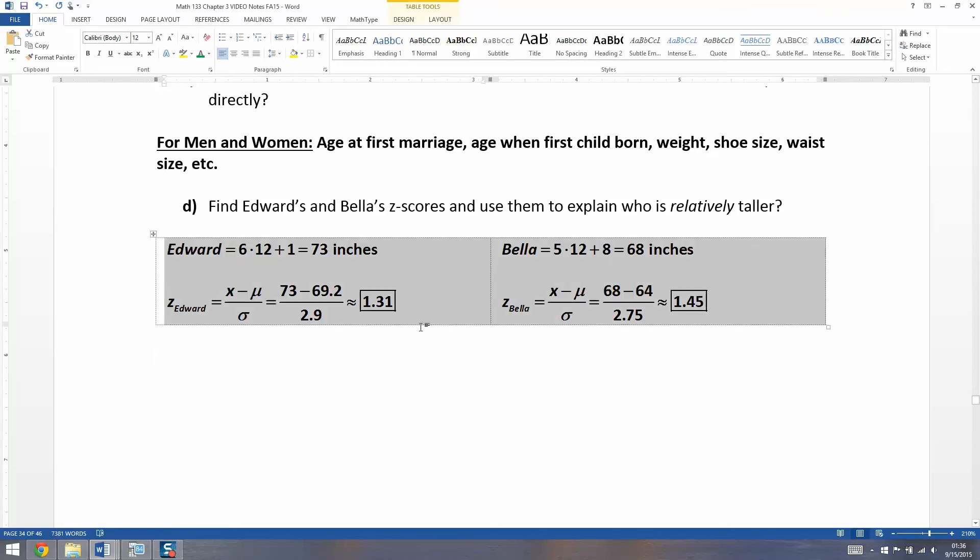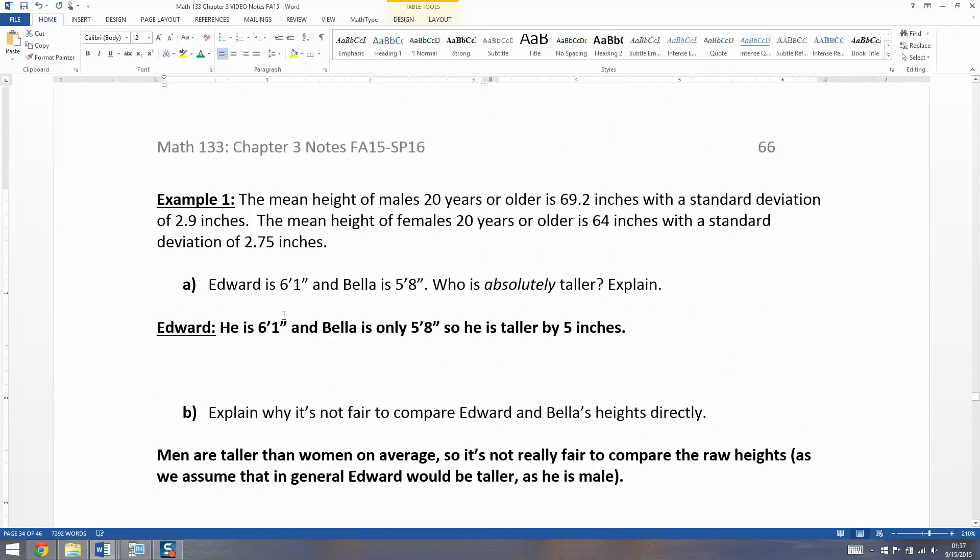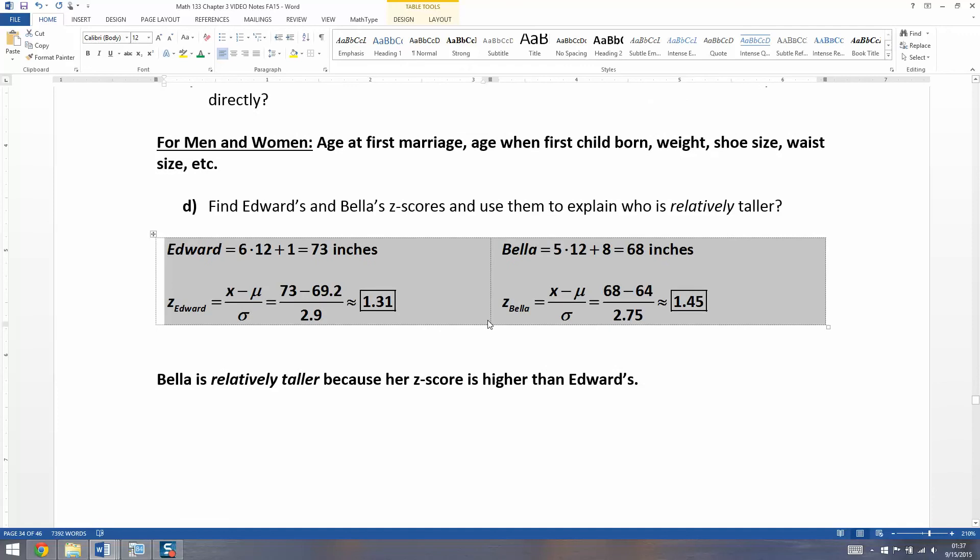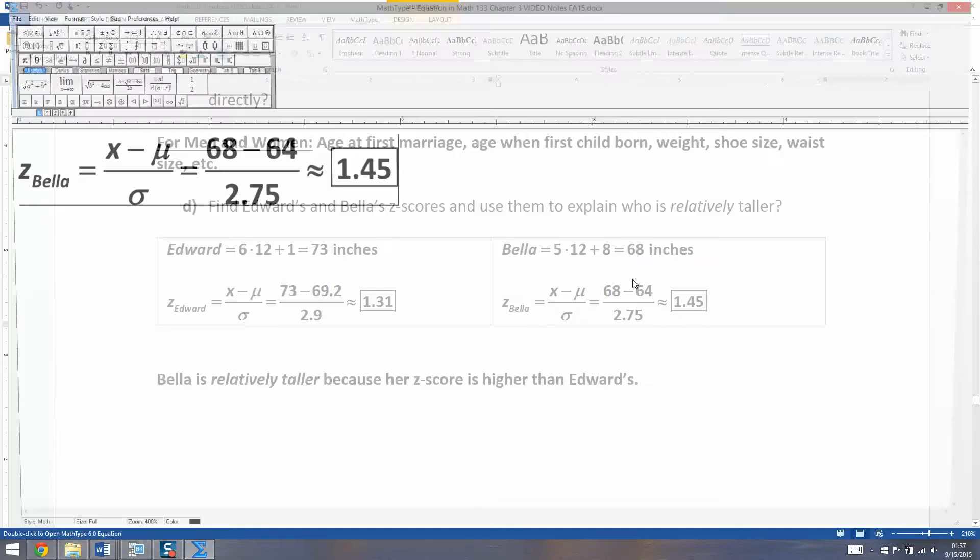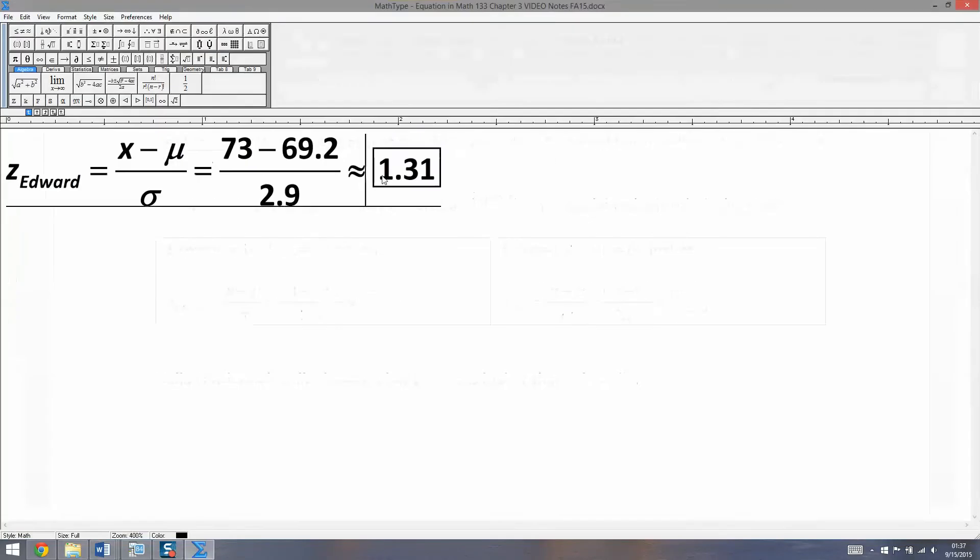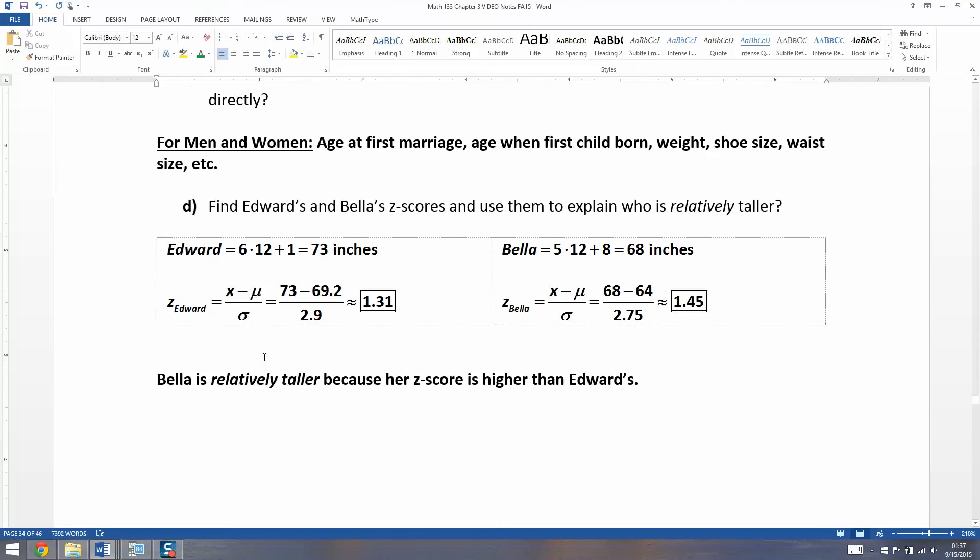So we've learned a valuable lesson. Who is relatively taller? Bella is relatively taller because her Z-score is higher than Edward's. Edward is the shorter one in relative terms, but the taller one in reality. When they stand next to each other, he's definitely taller than her. But when you compare their Z-scores, you find that she at 5'8" is taller respective to all women than he is in comparison to all men. She's 1.45 standard deviations above the mean, whereas he is only 1.31 standard deviations above the mean. So he's absolutely taller, but he's not relatively taller.